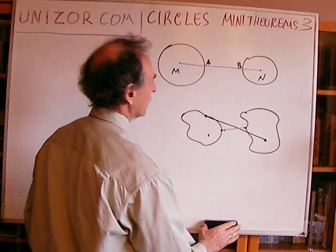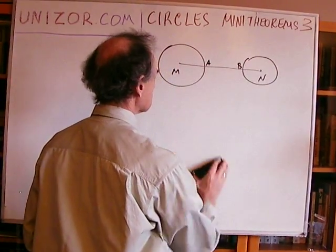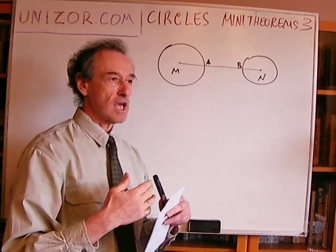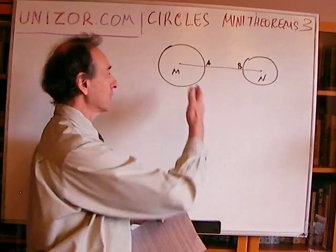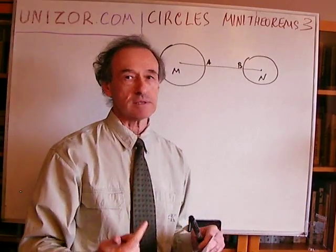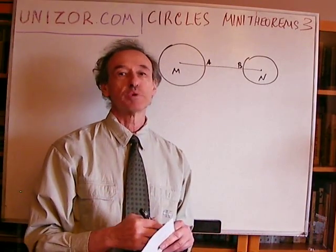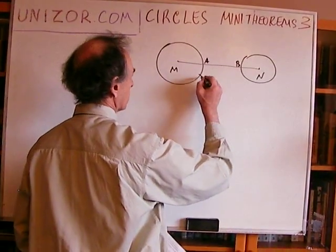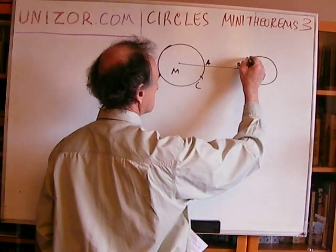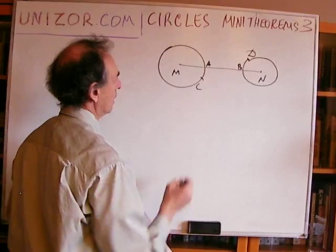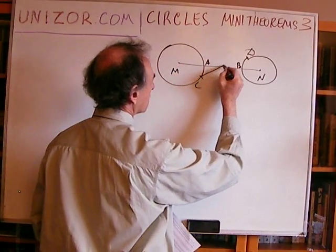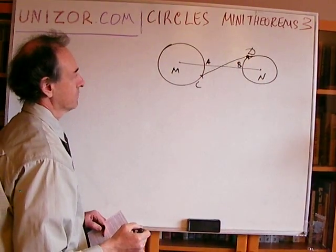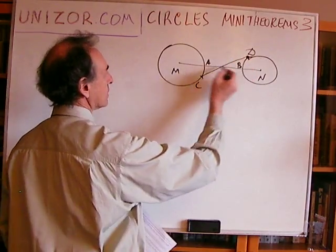To prove that the shortest distance is between A and B, all I have to do is prove that if I take any other two points — one belonging to one circle and another belonging to the other circle — then the distance would be greater. Let's consider two points: C on one circle and D on the other.